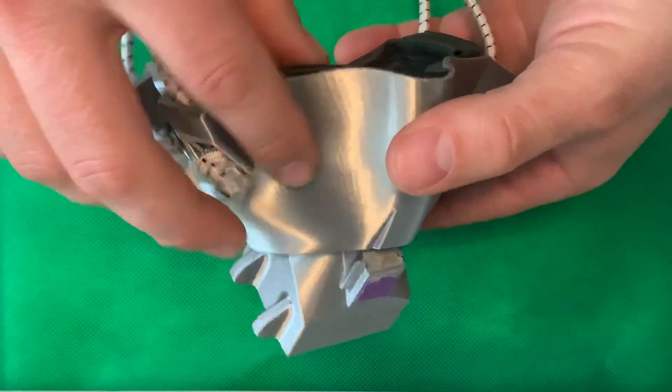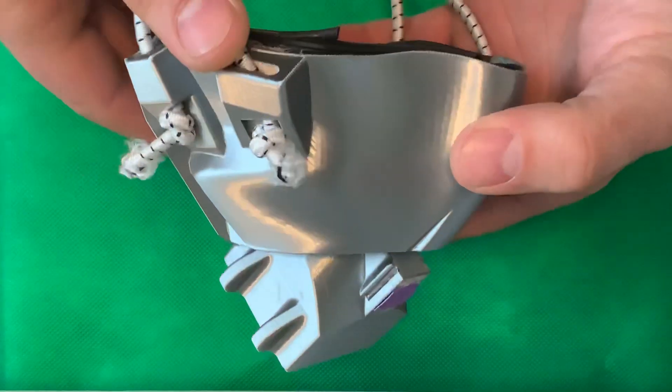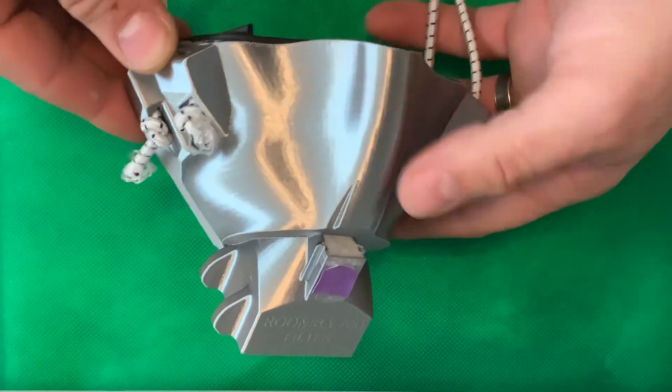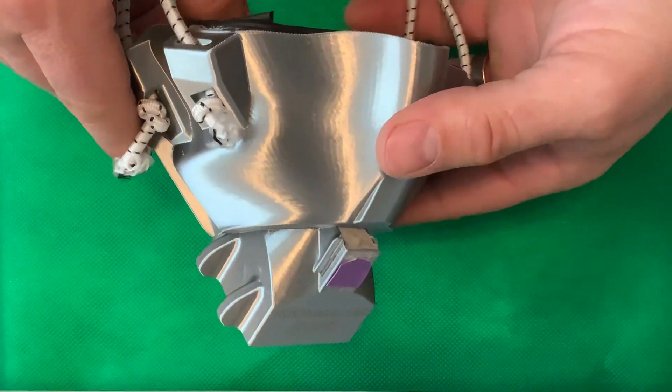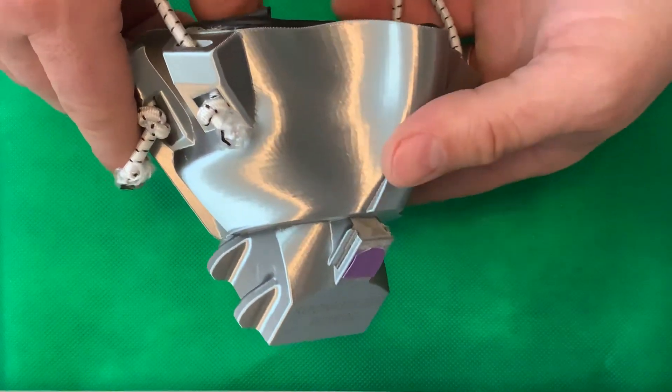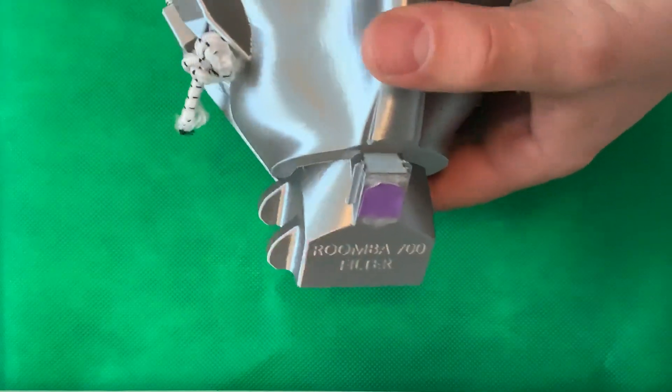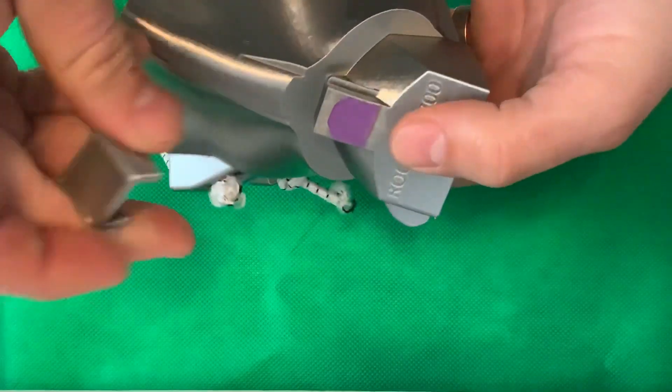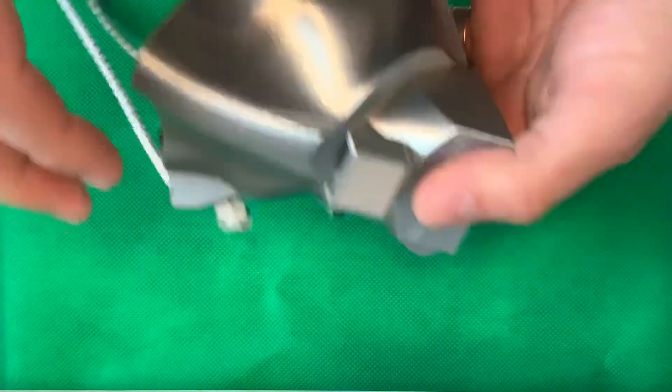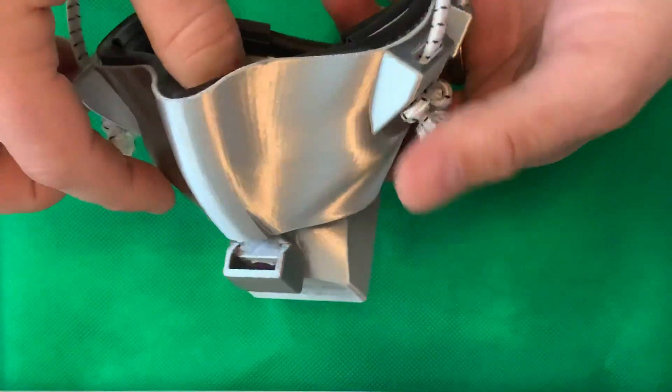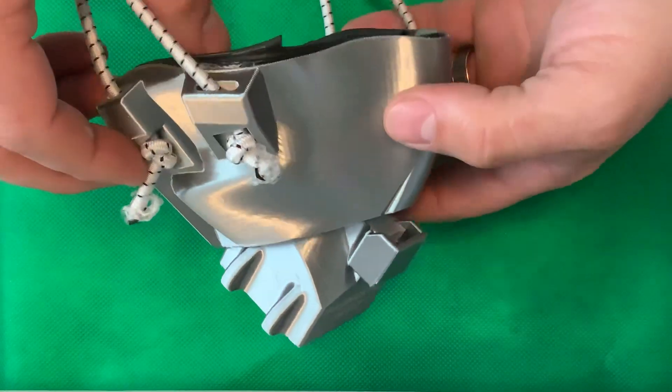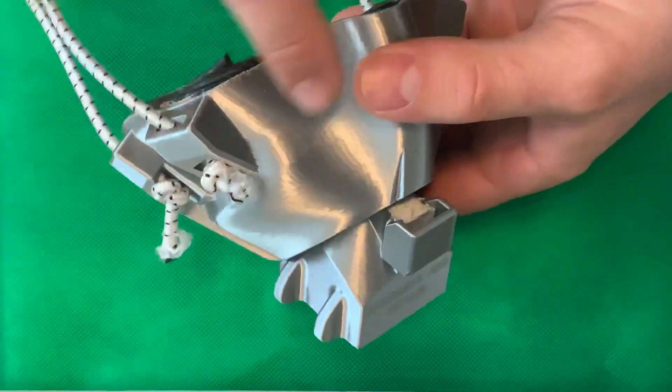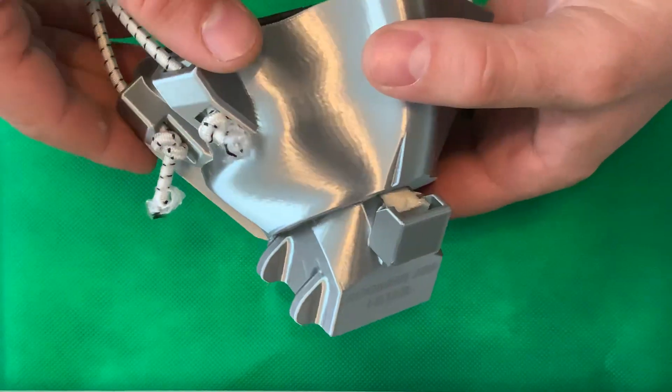One is the type of printer you're using. Most people, I assume, are printing with fused deposition modeling printers, FDM printers. These are the cheapest, most readily available printers found at most high schools, libraries, and things like that. Fused deposition modeling is a fantastic technology that enables very inexpensive prints. So a mask like this will print for probably like $3.